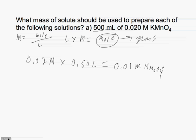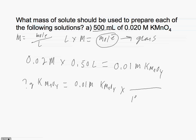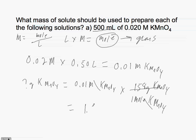Now we can convert our moles of potassium permanganate into grams. How many grams of KMnO₄ equals 0.01 moles of KMnO₄? We know that for every 1 mole of potassium permanganate there are 158 grams. Moles of KMnO₄ cancel out, and the answer is 1.58 grams of potassium permanganate.